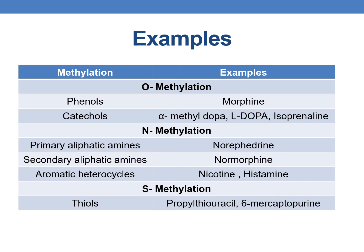Coming to the examples of drugs and endogenous substances that undergo methylation, based on the functional moiety, methylation can be O-methylation, N-methylation, and S-methylation. O-methylation occurs along with the oxygen atom; examples include phenols and catecholamines. Drugs undergoing O-methylation include morphine from the phenols category, and catecholamines such as alpha-methyldopa, L-levodopa, and isoproterenol.